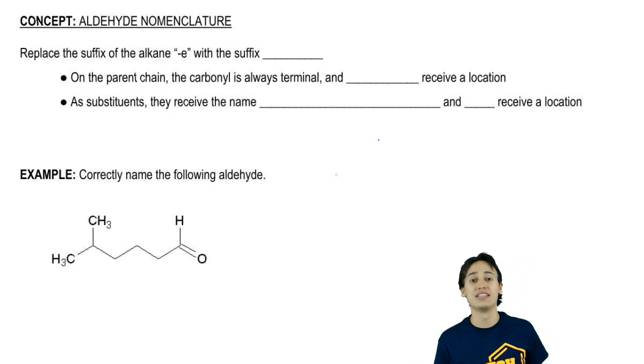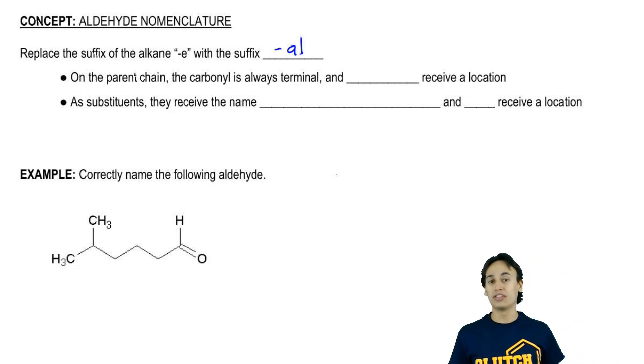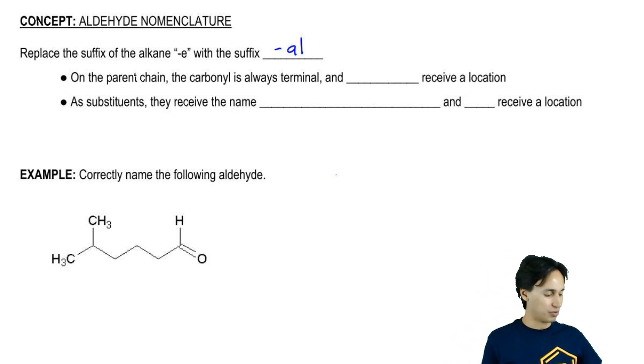It's the same thing with aldehydes, except we're just going to change one letter. It's going to be the suffix A-L. Now that could be a little confusing because those suffixes sound really similar. So ethanol would be an alcohol, ethanal would be a two-carbon aldehyde. You have to be careful about how you say those vowels.